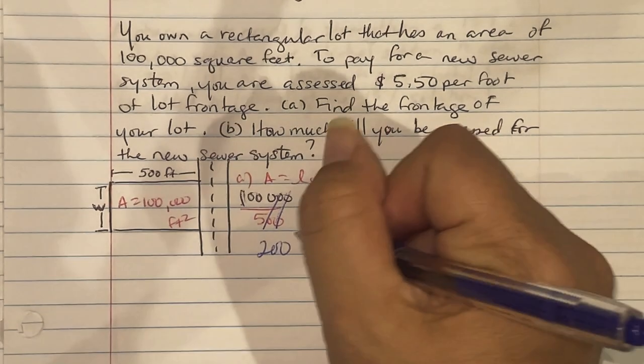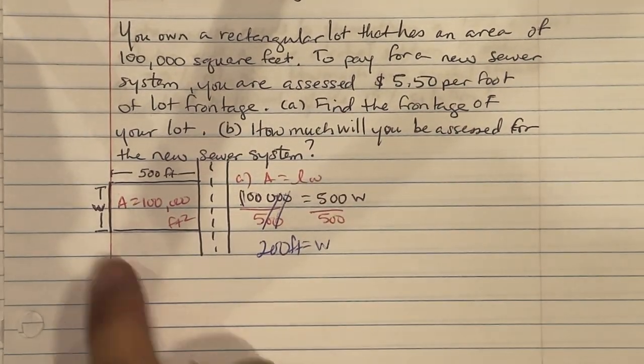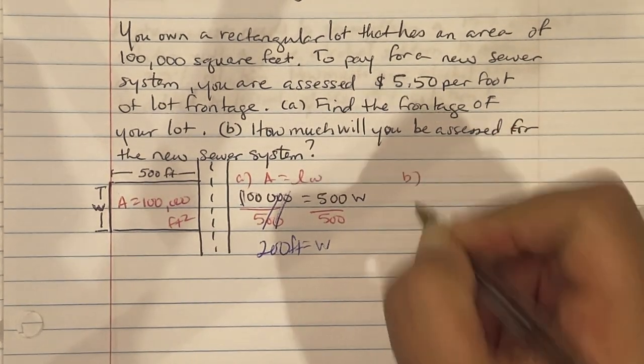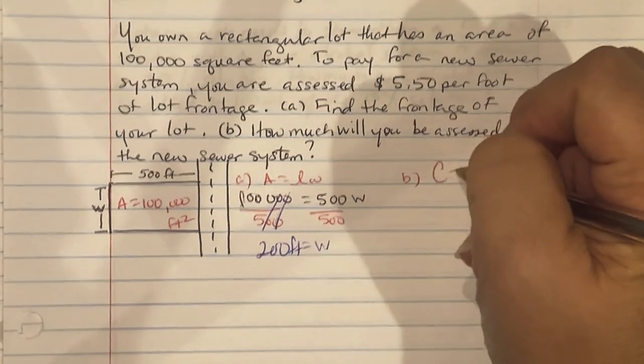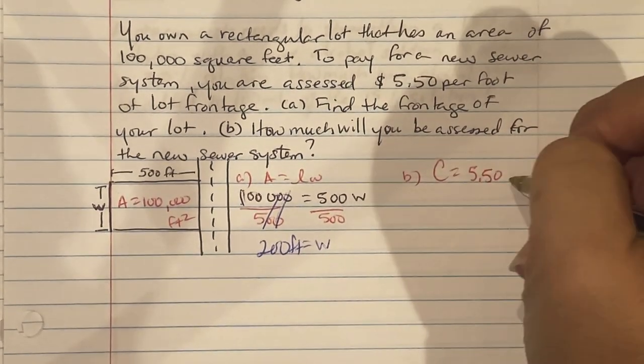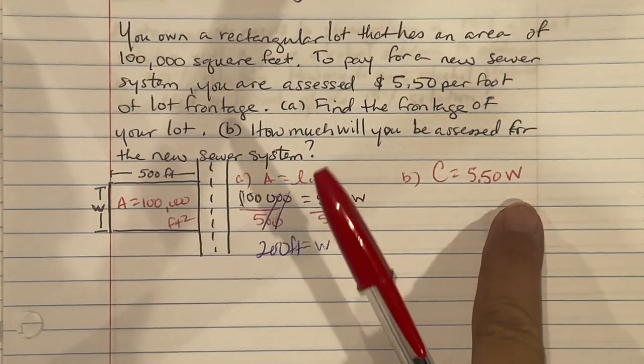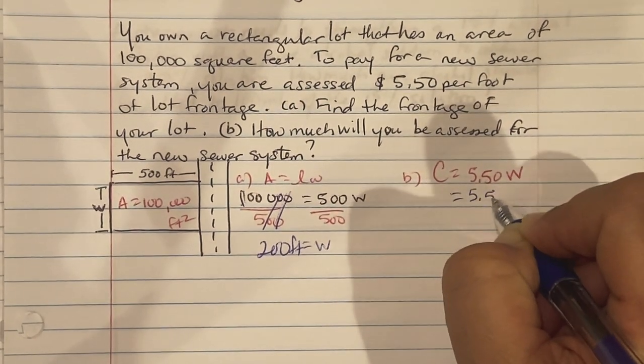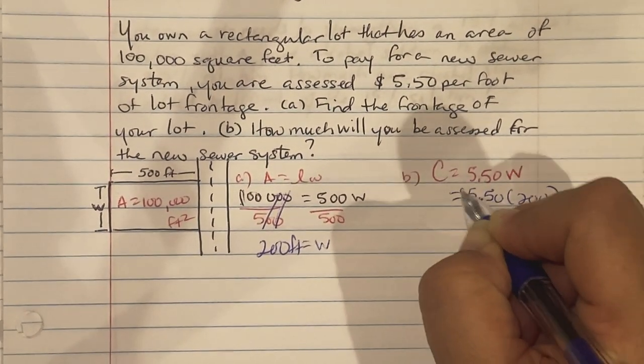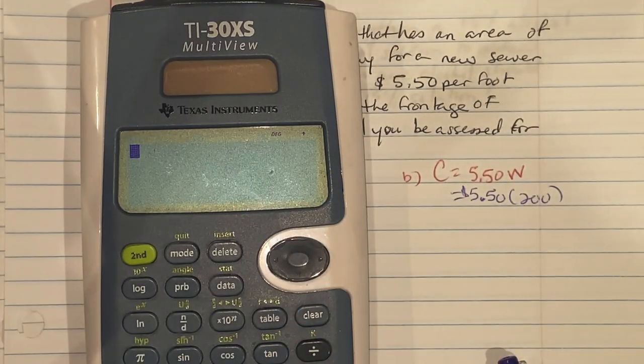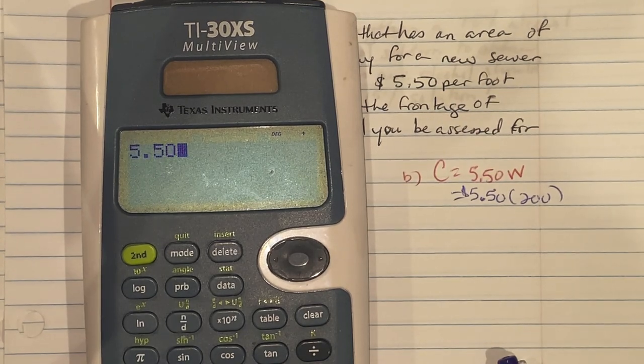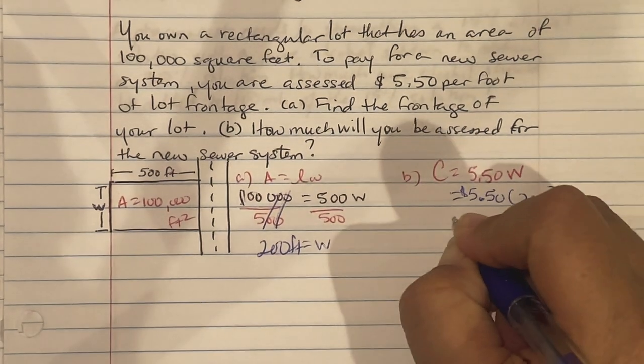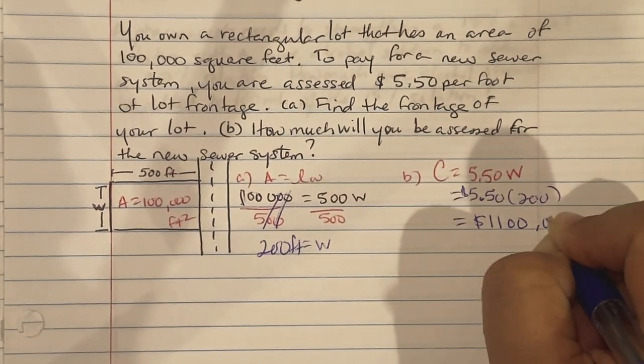So we know that our width right here, the front portion is going to be 200 feet. So part B wants us to find our cost, and they told you it was $5.50 per foot. So we're going to say times W because W is what we were finding. So 5.50 times 200 gives us $1,100. So the cost of the sewer increase is going to be $1,100.